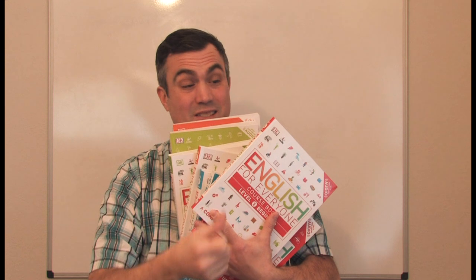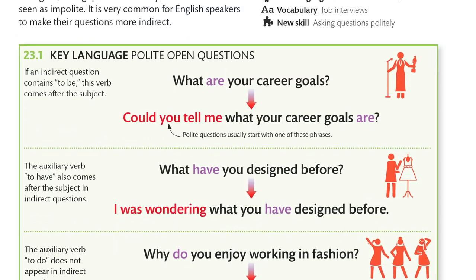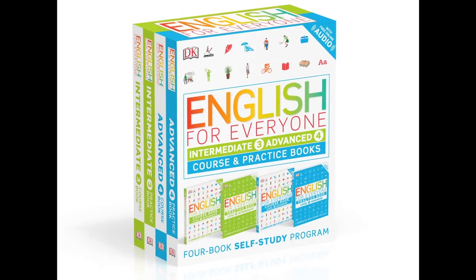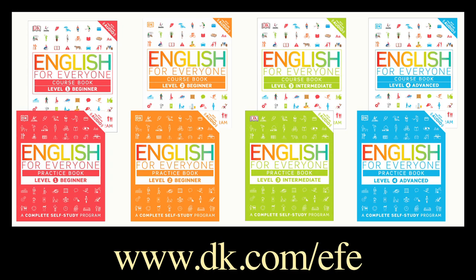DK's got an entire series of books called English for Everyone from beginner to intermediate to advanced. It's designed in a simple, smart way to help you learn English fast. It also has reading, writing, listening, and speaking skills. It's presented in a highly visual format, making the grammar and vocabulary easy to remember. English for Everyone is available wherever books are sold. It's also got free audio to go along with the text. So check out DK.com slash EFE.